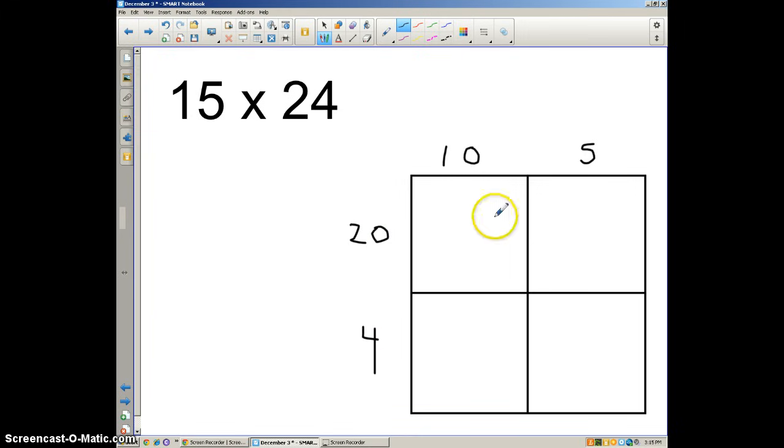And then we just multiply each of these sections of this rectangle. So 10 and 20 is 200. 20 and 5 is going to be, 5 times 2 is 10, and then since we're multiplying the tens place with one of the factors, there's going to be another 0 there. It's 100. 10 times 4 is going to be 40, and 5 times 4 is going to be 20.